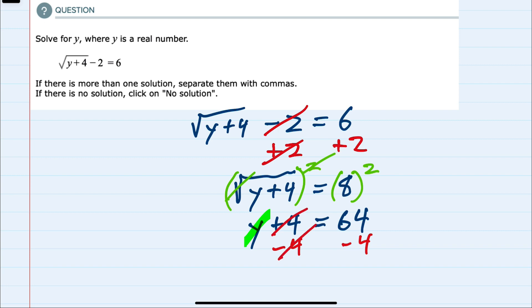On the left, it cancels, leaving me with just the y. And then on the right, 64 minus 4 is 60. So we have isolated the y to be equal to 60.